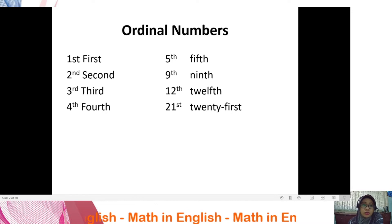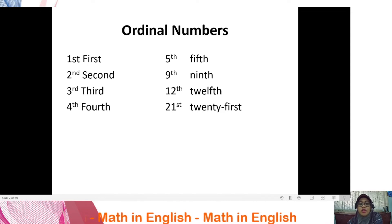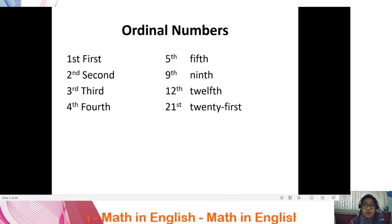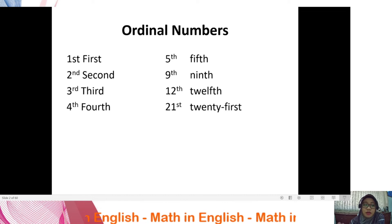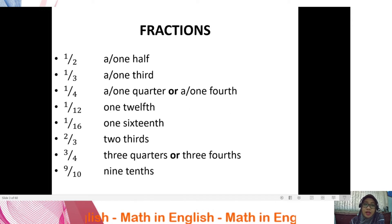Cardinal numbers represent how many of something — like one, two, three, four. Ordinal numbers tell us the position of something in a list. You can see there is a difference in how we pronounce ordinal numbers: first, second, third, fourth. They represent a position, for example: I'm the first child in my family, or I was born on the first of December.